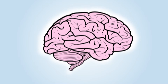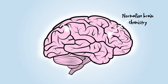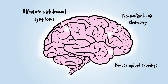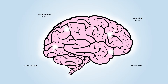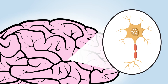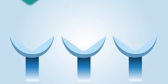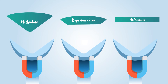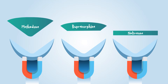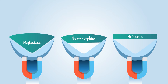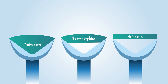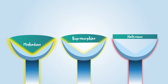These medications help to normalize brain chemistry, alleviate withdrawal symptoms, reduce opioid cravings, and reduce the risk of overdose through opioid blockade. Opioids boost dopamine levels by stimulating molecules called mu opioid receptors that sit on the surface of certain neurons. Each medication's affinity, or attraction, to the mu opioid receptor determines its binding capacity and ability to prevent other opioid attachment. The medication's activation of the mu receptor determines the body's opioid response.